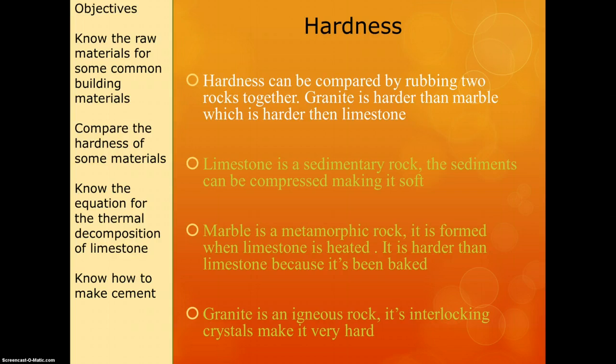For the higher paper, we need to know that limestone is a sedimentary rock, which basically means it's made up of layers, most likely of fossilised animals or plants. The sediments can be squashed together, which is what makes it soft. Marble is a metamorphic rock — originally made from limestone that has been heated up near the core of the earth, changing its structure, making it harder than limestone because it's been baked, a bit like putting clay in a kiln. Finally, granite is an igneous rock made up of lots of interlocking crystals, like those from volcanic rock, and because of those interlocking crystals it's really quite hard.